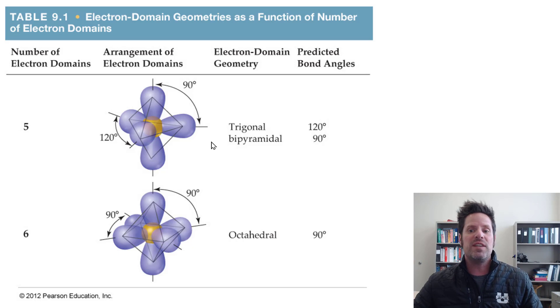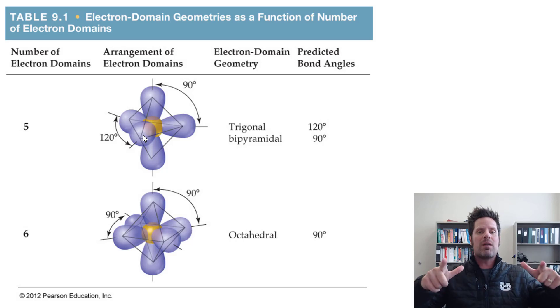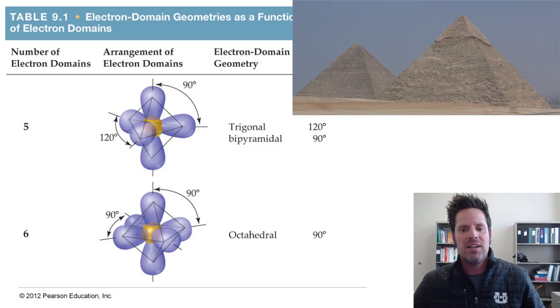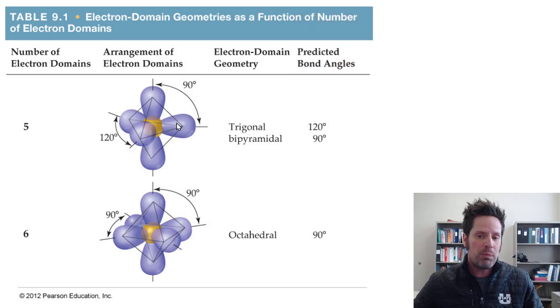By the way, we call this one trigonal bipyramid because if you draw it out, as has been shown right here, it looks kind of like two pyramids. That is a bipyramid with a triangle base instead of a square base, like the pyramids in Egypt. So you have a triangle base with two pyramids, one up top and one down bottom, hence we call it a trigonal bipyramid. Isn't that fun?